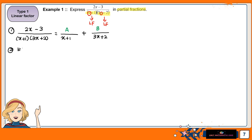After that, we need to equal the denominator. To equal the denominator, you multiply both fractions by the opposite linear factor — top and bottom. Here you multiply by (3x plus 2) on the bottom and also on the top. Please remember to put brackets because it is the factor, otherwise your calculation may be wrong.